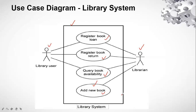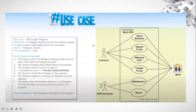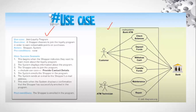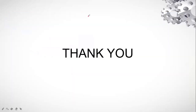To summarize: the textual format in which a business analyst defines the use case is called simply the use case, while the visual representation of that use case is called the use case diagram. Thank you — that's all for today's class. In the next lecture, we are going to talk about how to design the use case diagram in detail.